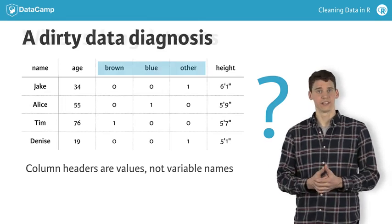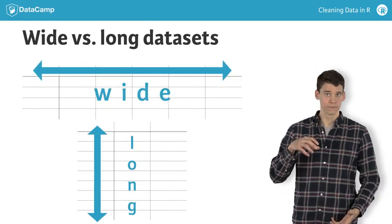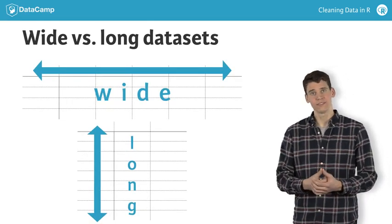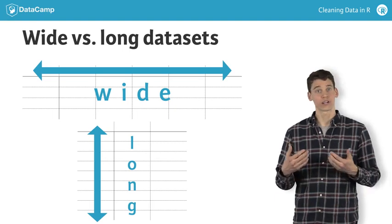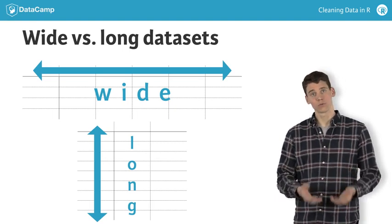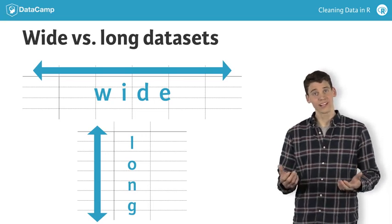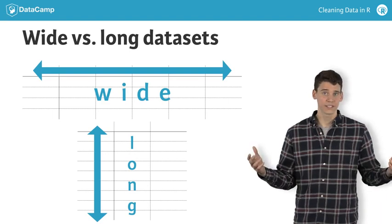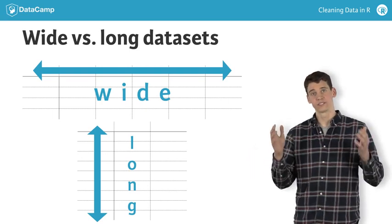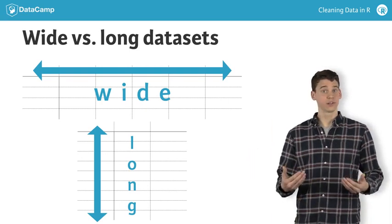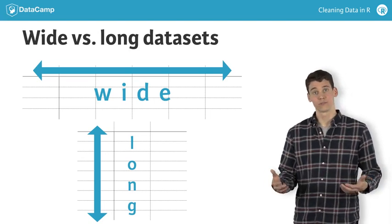When talking about datasets, it's often convenient to refer to them as either wide or long. Although these definitions are somewhat imprecise, they generally refer to situations when you have more columns than rows, or more rows than columns, respectively. A less strict interpretation is simply that a wide dataset tends to represent key attributes of the data horizontally in a table instead of vertically, similar to the example you just saw. The opposite is true for long datasets.